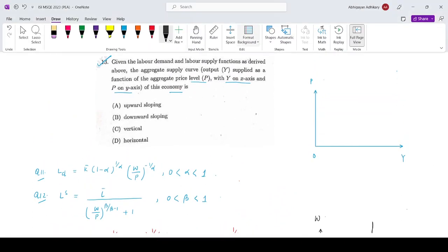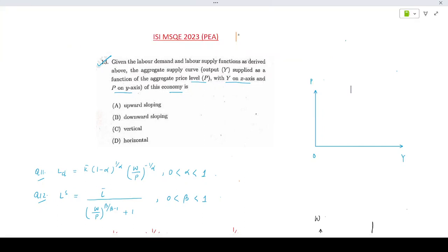That means in the long run, when the labor supply curve becomes vertical, your aggregate supply curve will also become vertical.